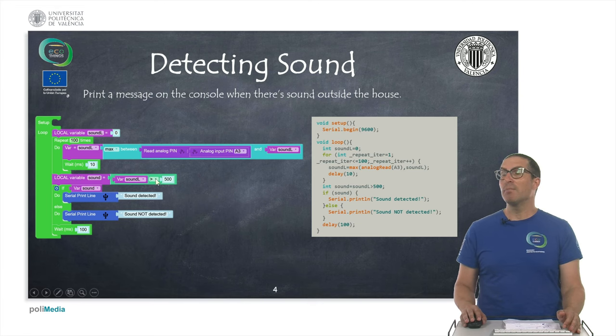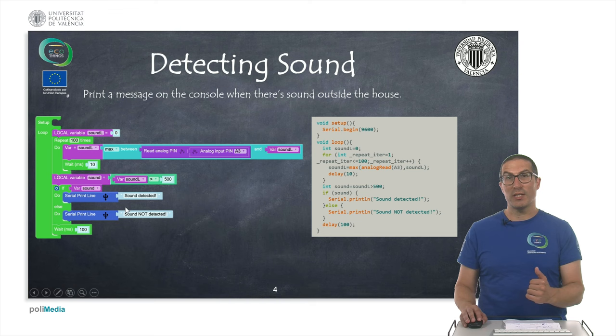Once we have that, we will call it the sound level or sound L. And if the sound level is higher than a given value, this is a threshold that we can set, then we print the message to indicate that we have detected the sound or not detected the sound.